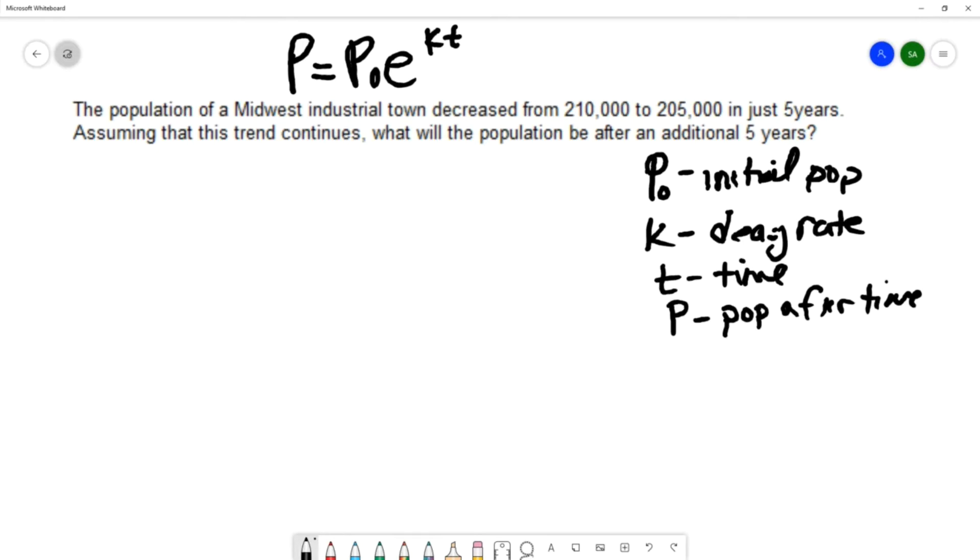With this information at the beginning, that we have a starting population of 210,000, and after five years it decreased to 205,000, we'll be able to find that decay rate.